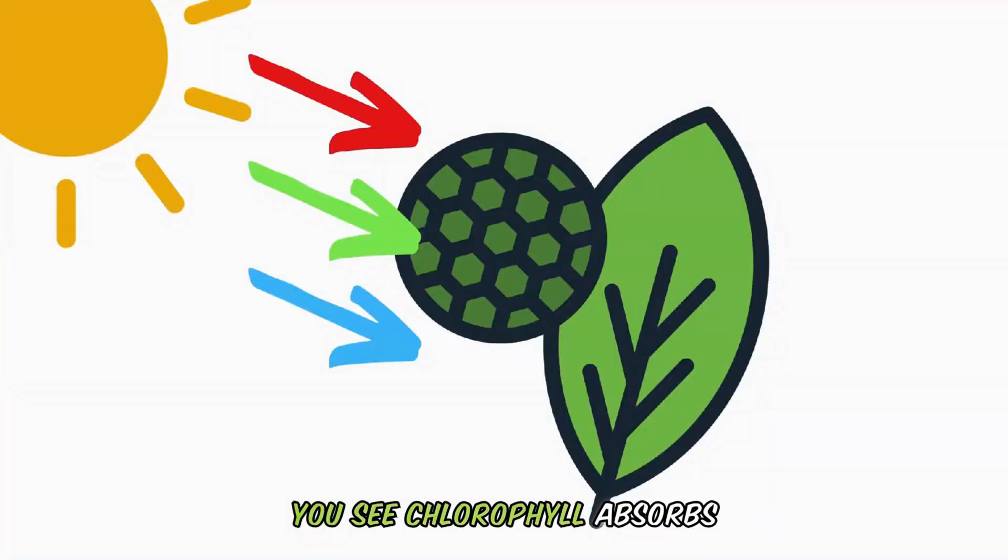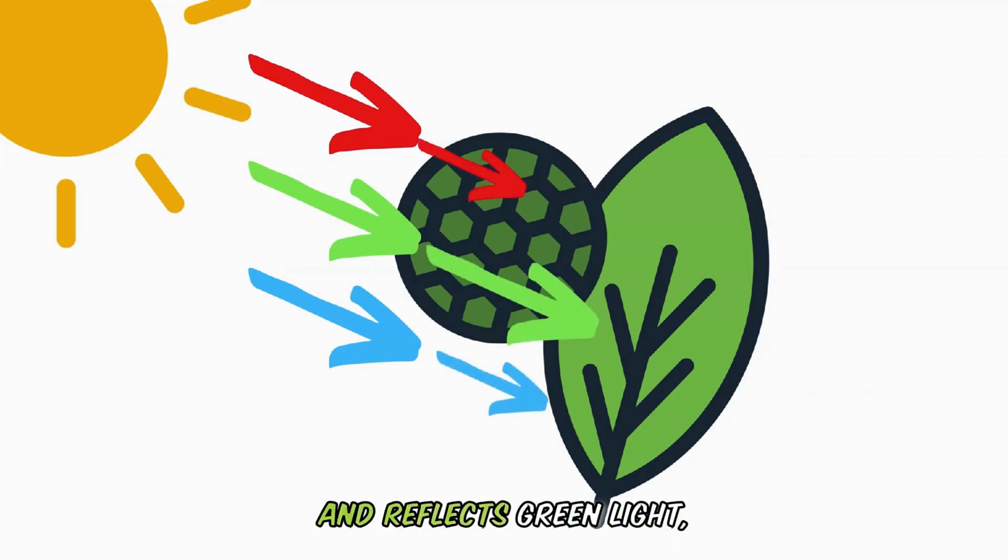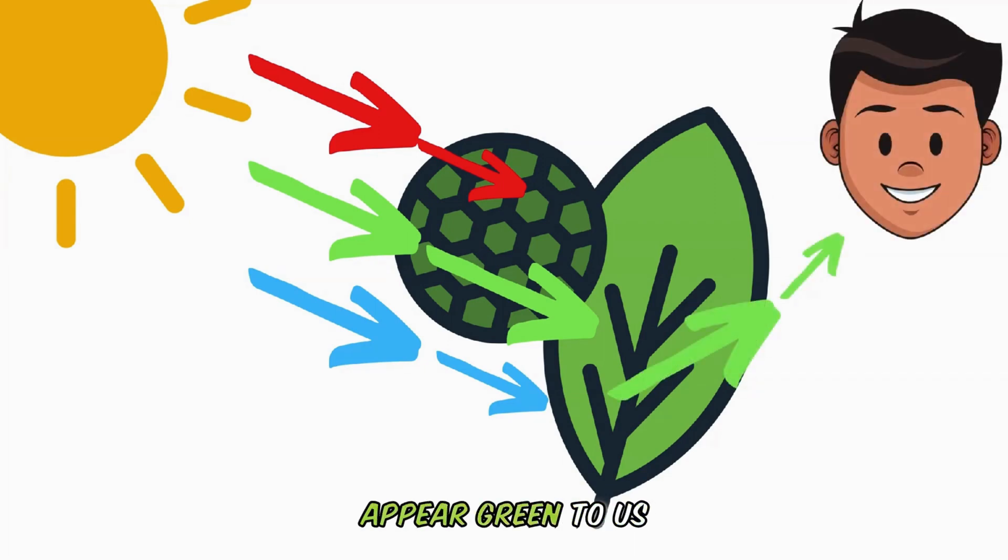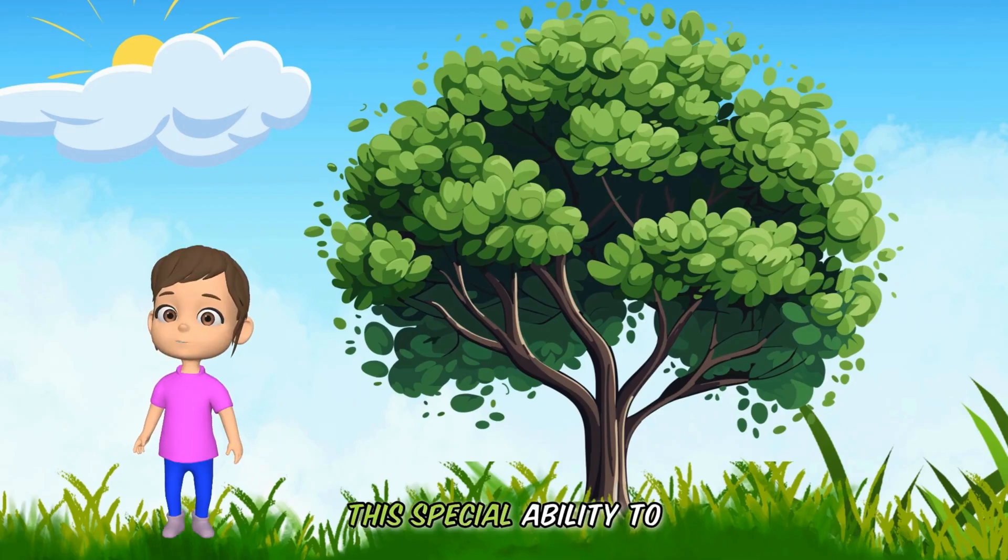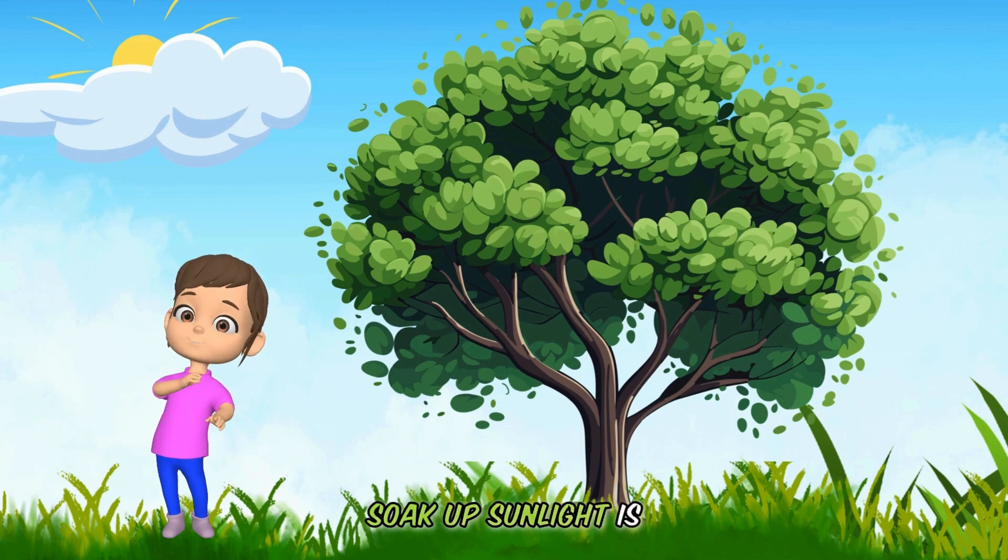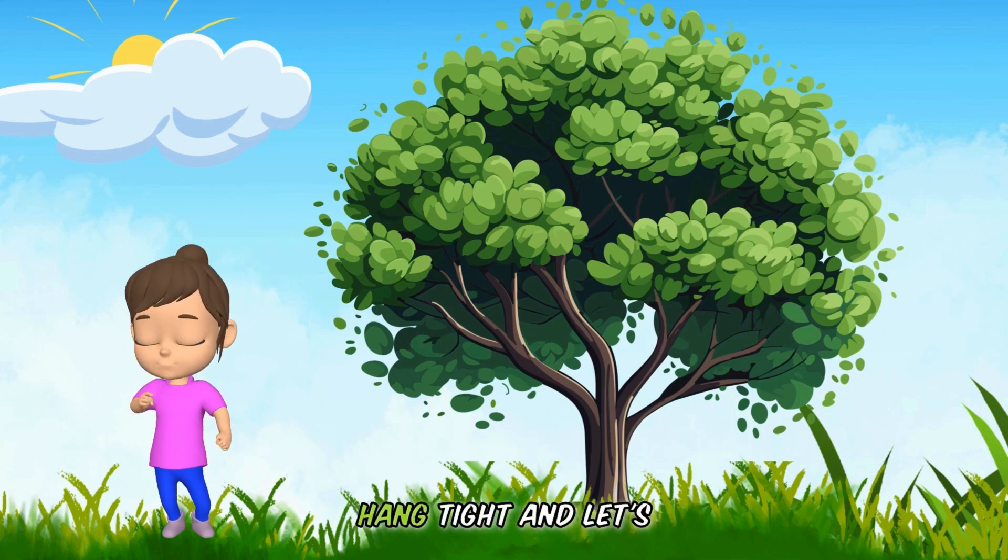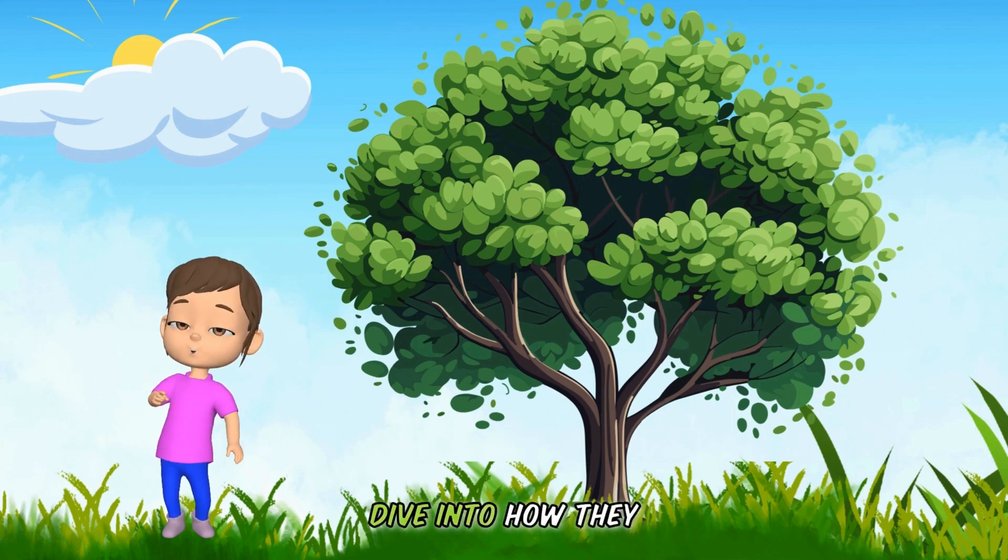You see, chlorophyll absorbs light mostly in the red and blue wavelengths, and reflects green light, which is why plants appear green to us. This special ability to soak up sunlight is crucial for plants to make their own food. Hang tight, and let's dive into how they do it.